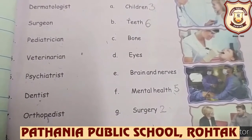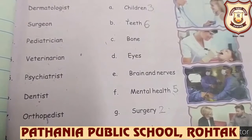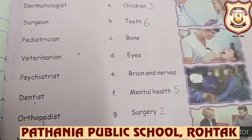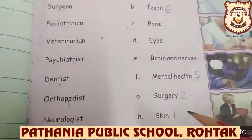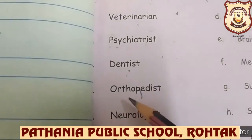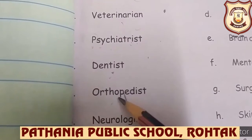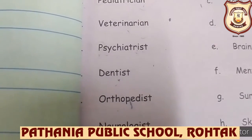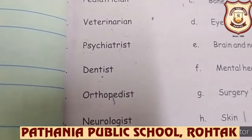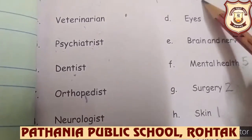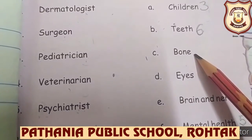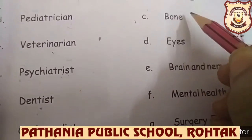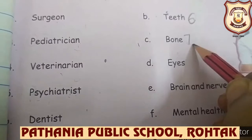Next, number seven: Orthopedist. An orthopedist treats conditions related to bones. So for number seven, in front of 'bones,' you have to write number seven.